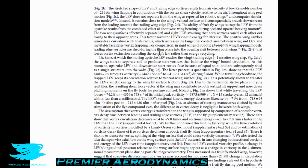For comparison, in the rigid wings of robotic Drosophila wing flapping models, leading edge vortices are shed during the fling phase into the opening cleft between both wings, forcing vortex extension according to Kelvin's law rather than energy recycling. Our human-designed wings are not nearly precise enough, so the vortices produced end up canceling each other or not generating as much lift as they do in real insects.